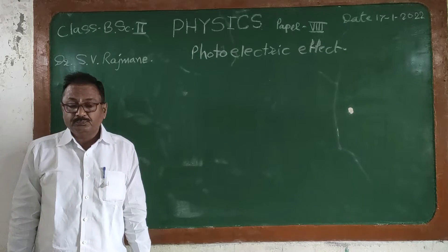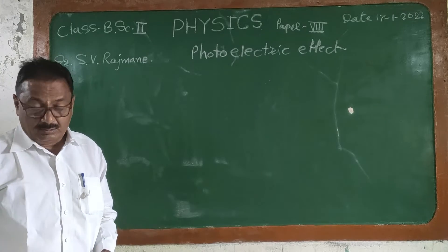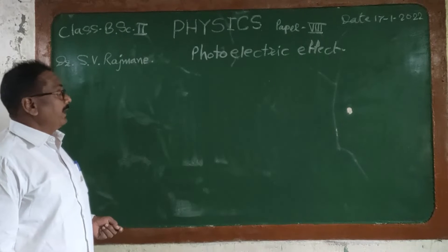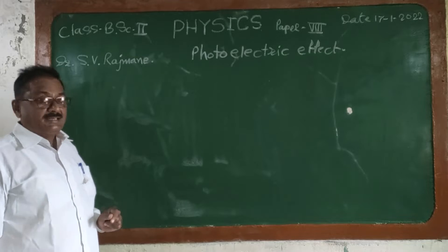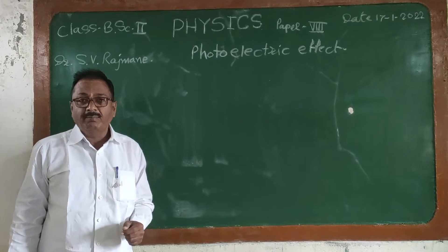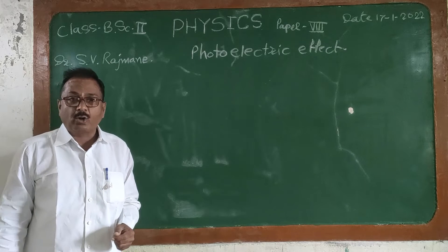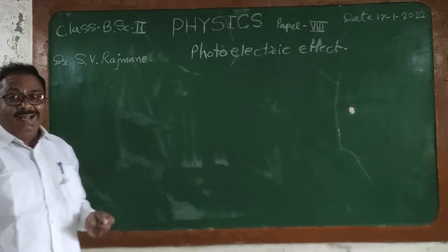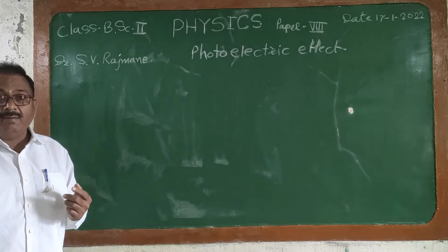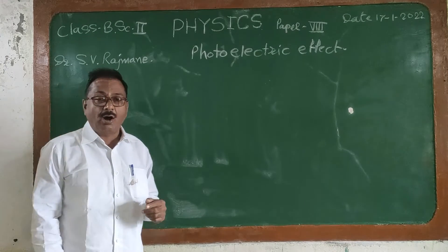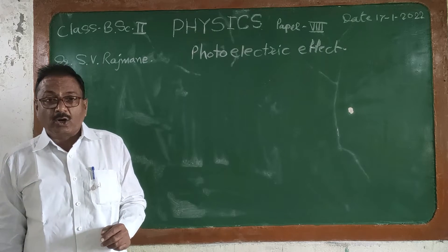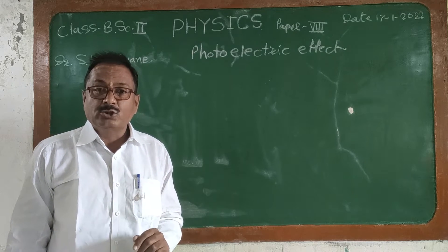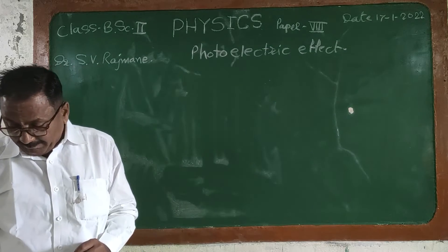Good morning. We are discussing the photoelectric effect. The photoelectric effect is when light is incident on a metal surface, the emission of electrons may take place. This process is known as the photoelectric effect. The electrons emitted from the metal surface due to radiation of light are known as photoelectrons, and the current due to those photoelectrons is known as photoelectric current.